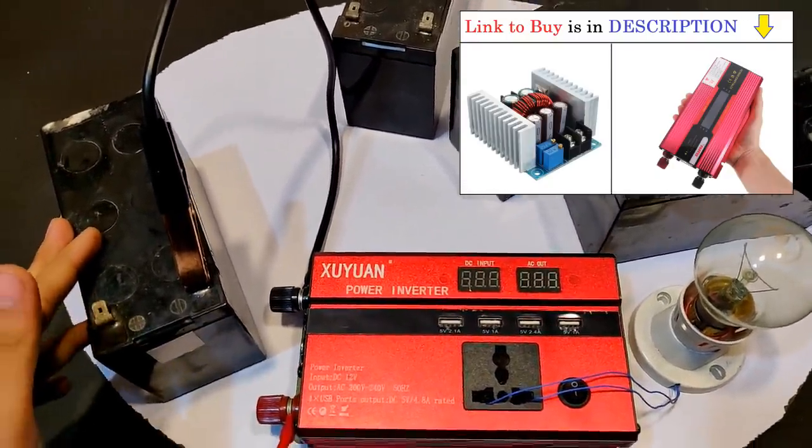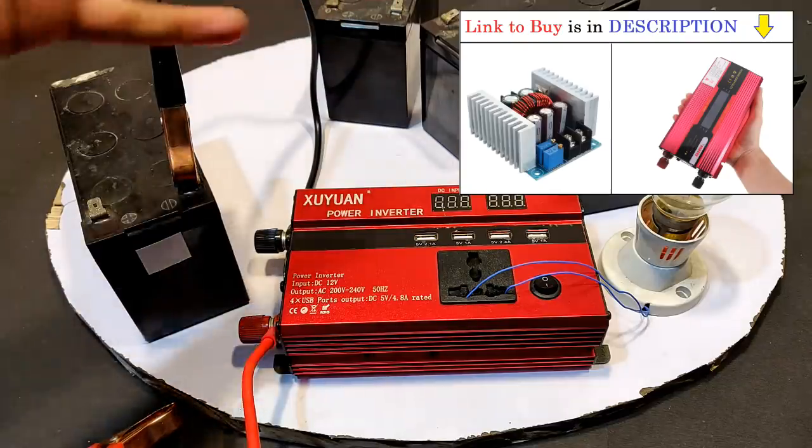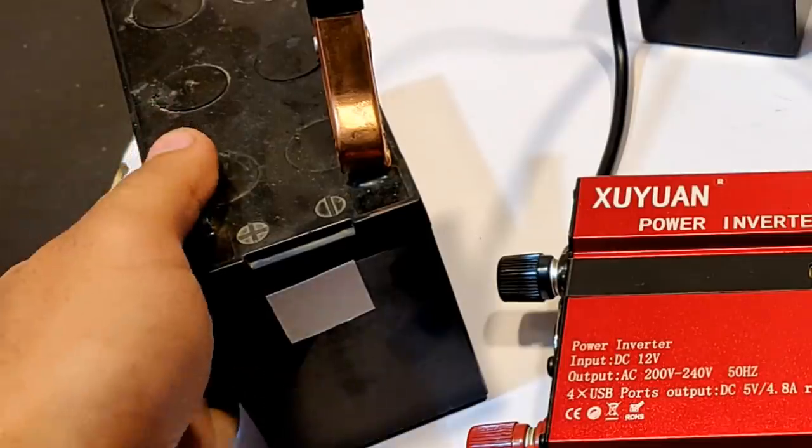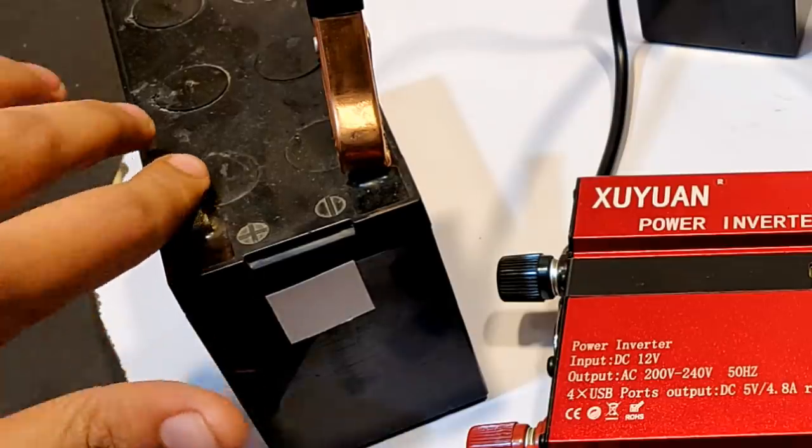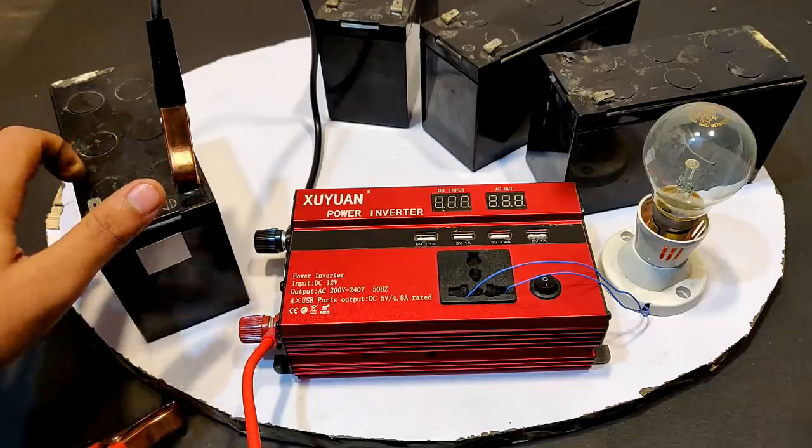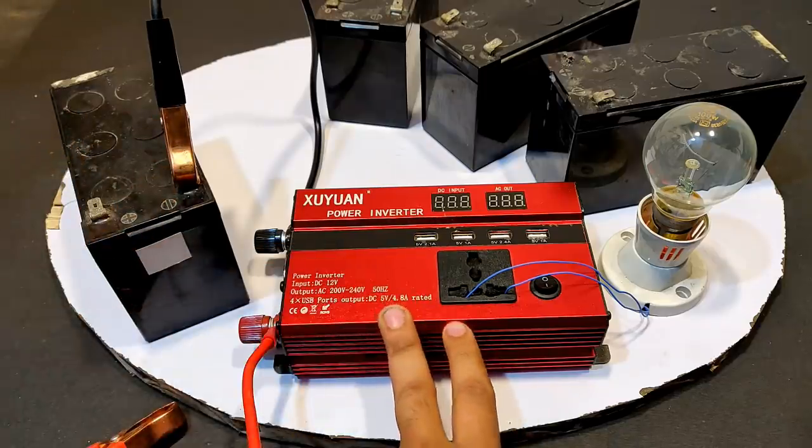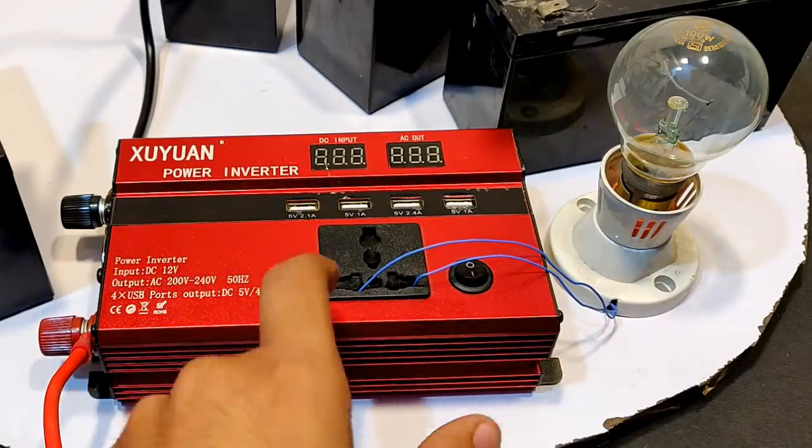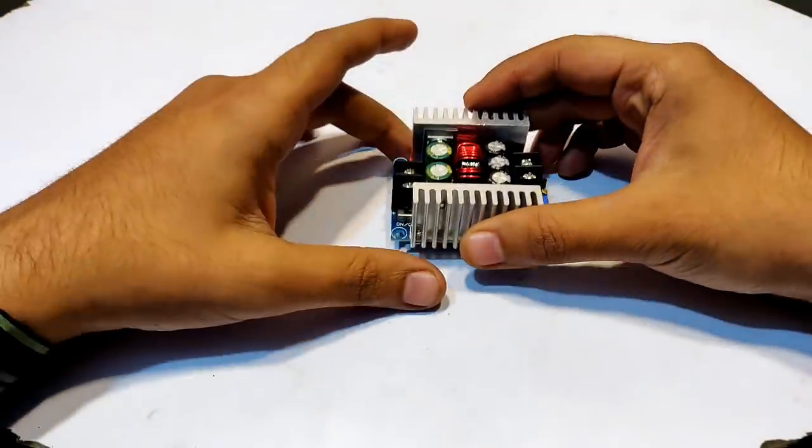So if we connect all the batteries in parallel we will get higher current, but still the output voltage is not going to be stable. It's still going to decrease with time as the energy gets consumed by this inverter and the load connected. So the solution to the unstable voltage problem is this circuit.